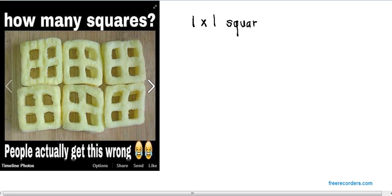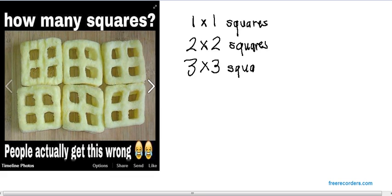First, counting all the 1x1 squares, then all the 2x2 squares. Then we'll count how many 3x3 squares there are. And the biggest square you can find in the picture is a 4x4 square. And then after we determine how many of each of these there are, we will add them up to get the total answer to the problem.